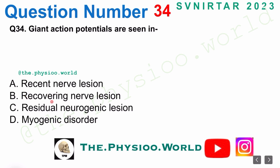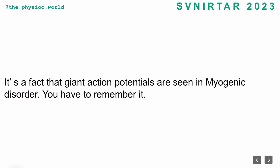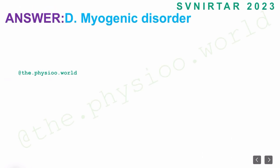B: recovering nerve lesion, C: residual neurogenic lesion, or D: myogenic disorder. It's a fact that giant action potentials are seen in myogenic disorder and you have to remember it — there is not much concept behind it, you just have to remember it. So the correct answer is option D: myogenic disorder.